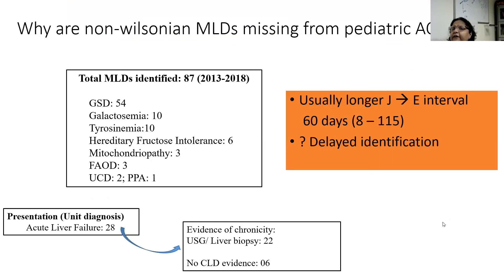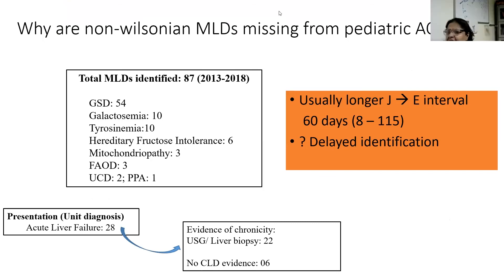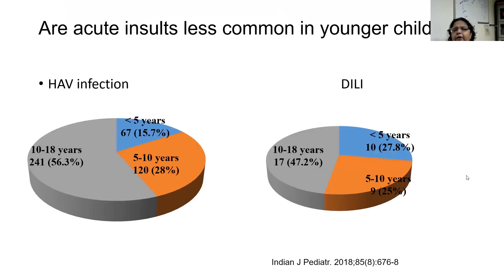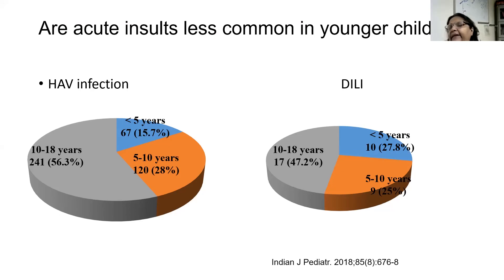Why are non-Wilsonian metabolic liver diseases not developing pediatric ACLF? They have a long jaundice interval, causing delayed identification of these patients. Another reason is that most are smaller children, and these smaller children do not have the acute insults in the form of HEV — from our own data, those who had HEV under five years were just 15%. Even DILI was just 27% in the under-five age group. So it appears that these acute insults are not happening in young children as often, and hence younger children with chronic liver disease are not becoming ACLF. We need more data to decide this.